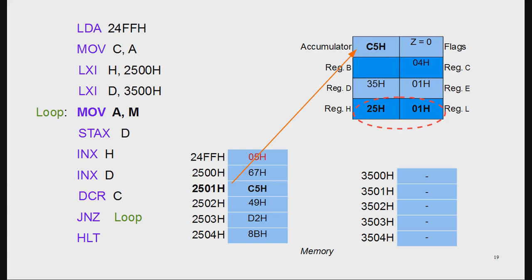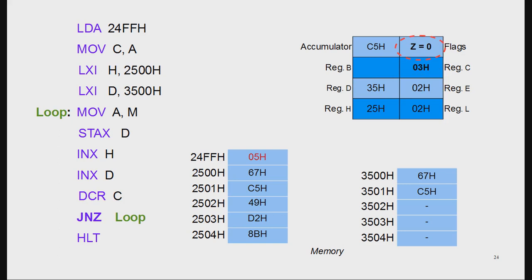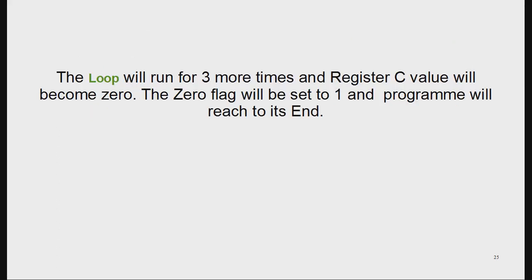The program goes back to MOV A,M, where the value at HL pair address 2501H is copied into the accumulator. From the accumulator it goes to the destination, then the HL pair increments, the DE pair increments, and C is decremented again. Now C is 03, and the zero flag is still not set, so this looping action continues.